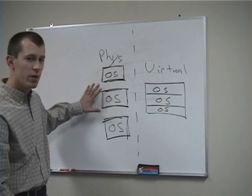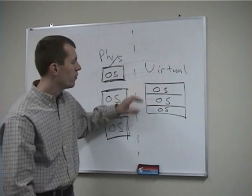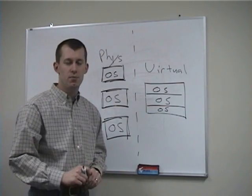So on the left, we have three physical boxes, each running their own separate operating system, and on the right, we have one physical box, but it's running three different operating systems.